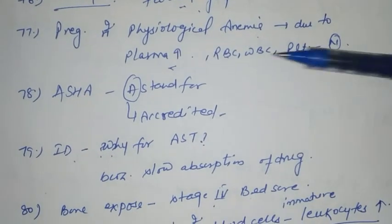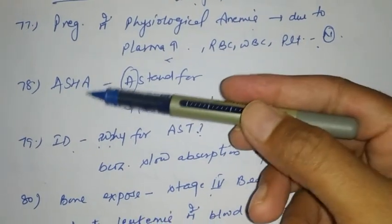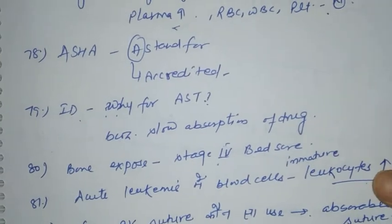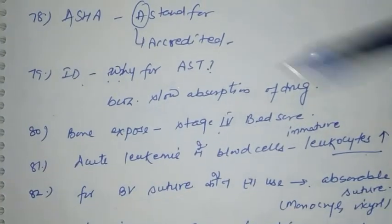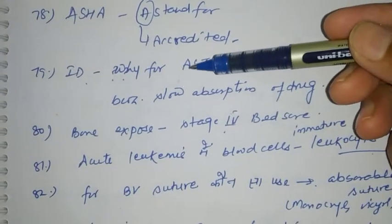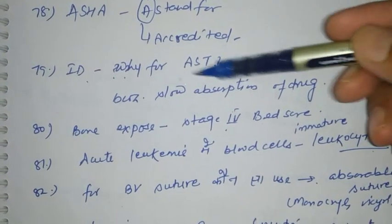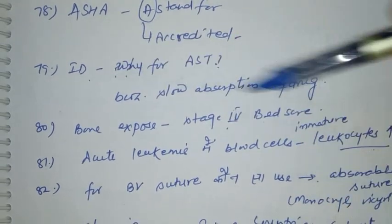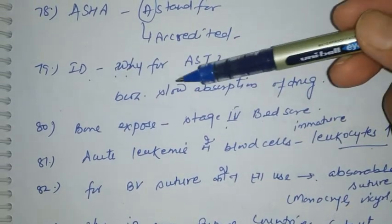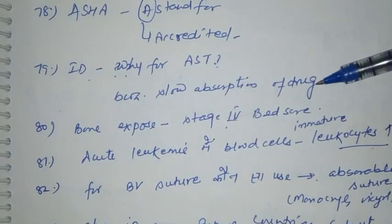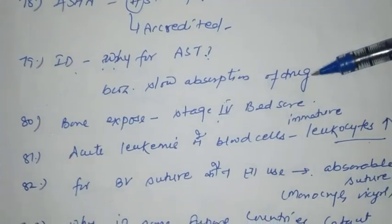In pregnancy, why does the female have physiological anemia? Because the plasma volume or blood volume increases, whereas RBC, WBC, and platelets remain normal. In ASHA, the letter A stands for Accredited.